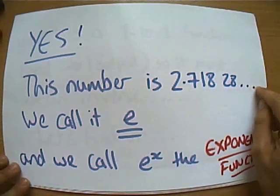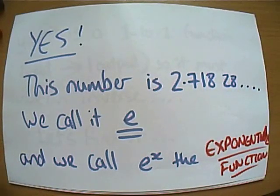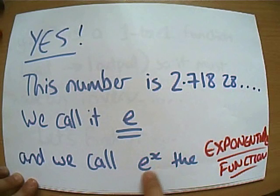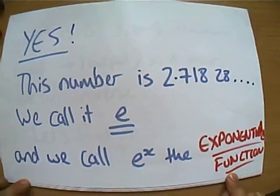It's 2.71828, blah, blah, blah. And being mathematicians, we like to give numbers, letters or symbols for them, so we call it e.